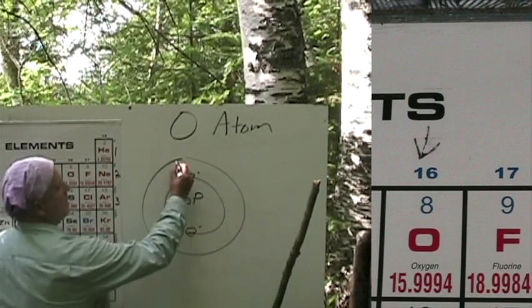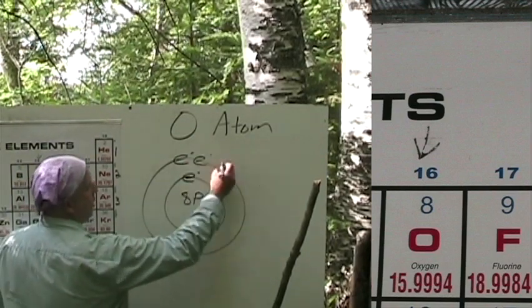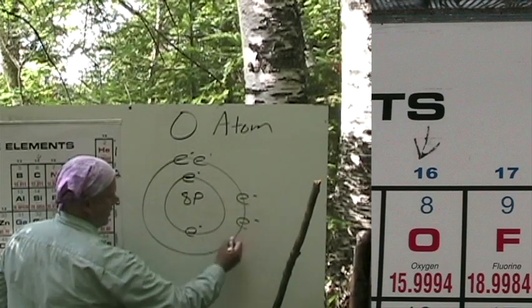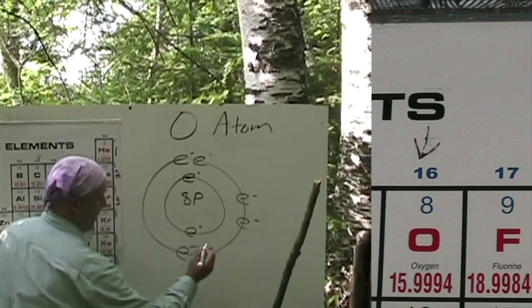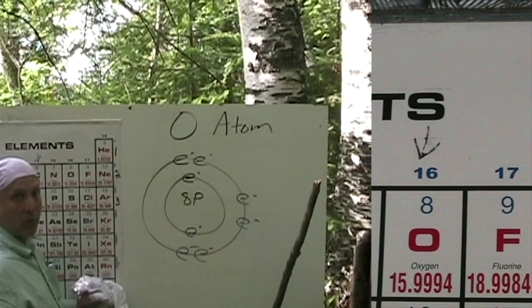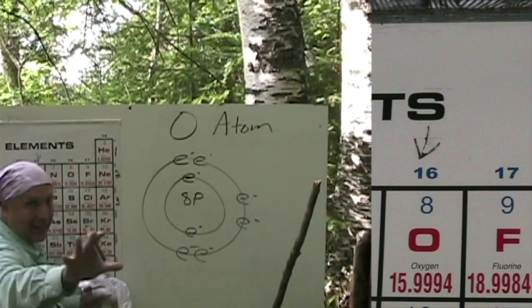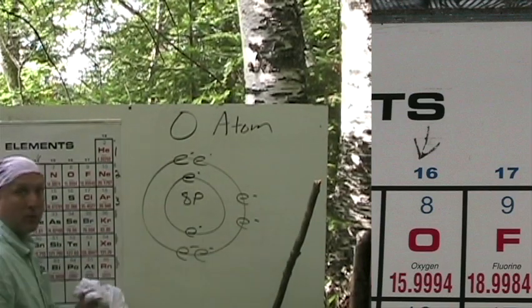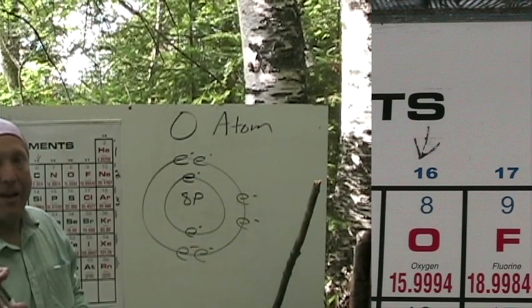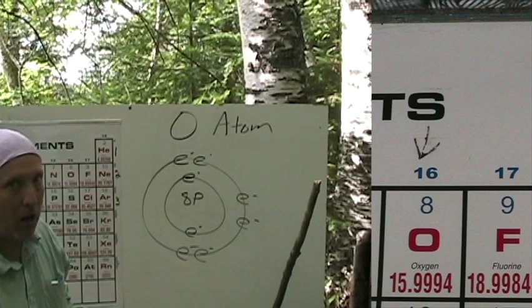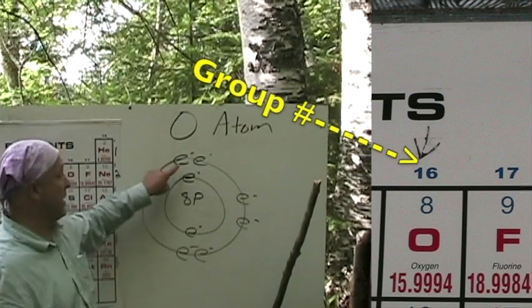But we already have two, so we need a total of eight. One, two, three, four, five, six, seven, and eight. We have a total of eight electrons because we have a total of eight protons. But now, how many do we have on the outer shell? We have six.